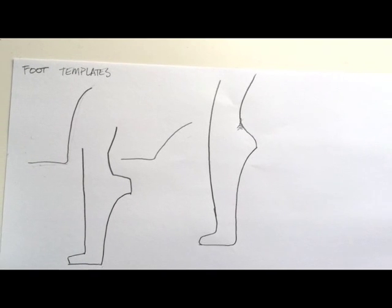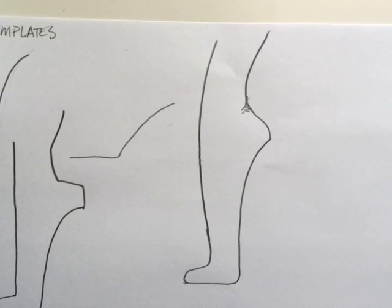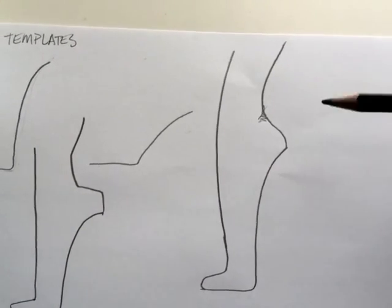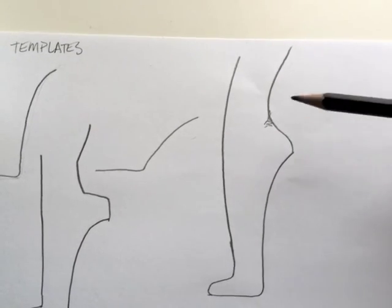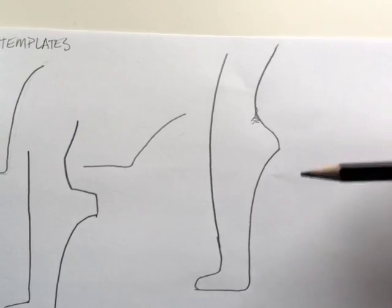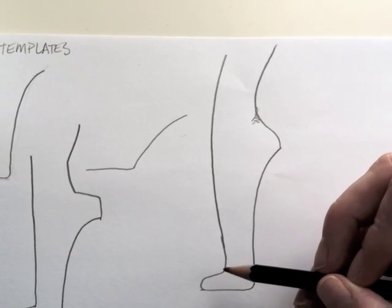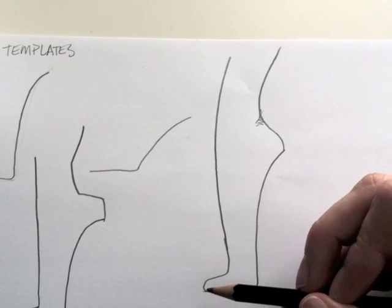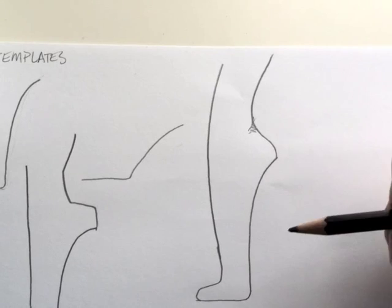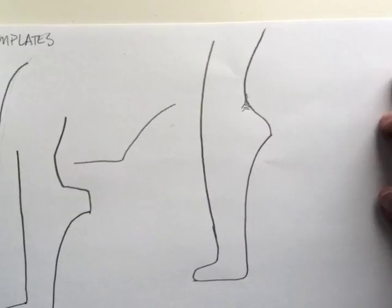A great thing about a foot template is that once you've inked this all in and scanned it in and printed it out to work with a number of times, you can change the toe depending on if you want a really pointy toe or if you want a square toe. You can make some changes to this, but because you have your template, it will be consistent. That's a benefit to doing something like this.